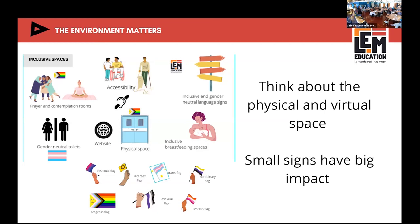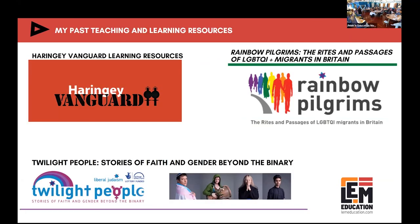The environment matters — think about the physical space as well as the virtual space. Have gender-neutral toilets — they should just be called toilets. Many further education colleges have prayer and contemplation rooms; having the Progress Flag in there is really important. Think about inclusive breastfeeding spaces — it's not just cisgender women who have children. A rainbow flag with the word 'welcome' displayed permanently behind reception makes a statement: you're welcome throughout the year, not just in June.